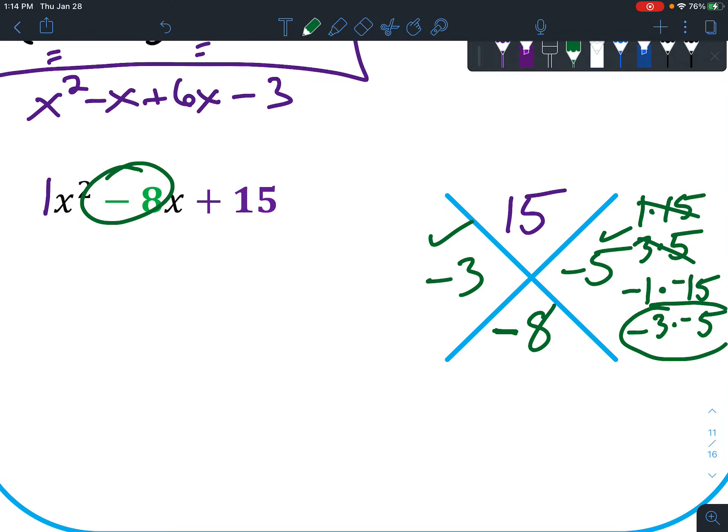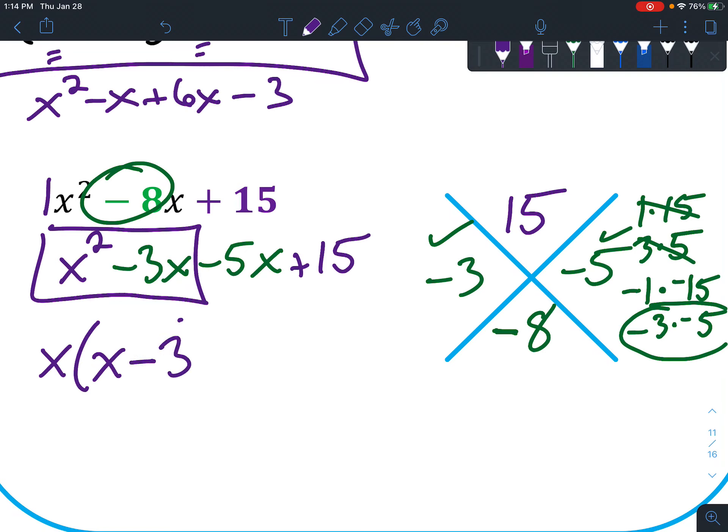So we're going to use those to replace our negative 8. So we get negative 3x minus 5x, and then recopy everything else. And then box this in. The only thing they have in common is an x, so that pretty much just changes your exponent there. And then negative 3, because negative 3 times x is negative 3x.